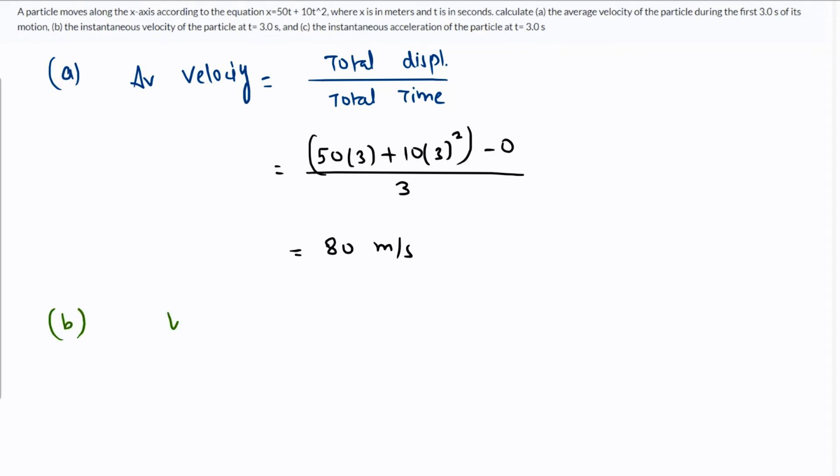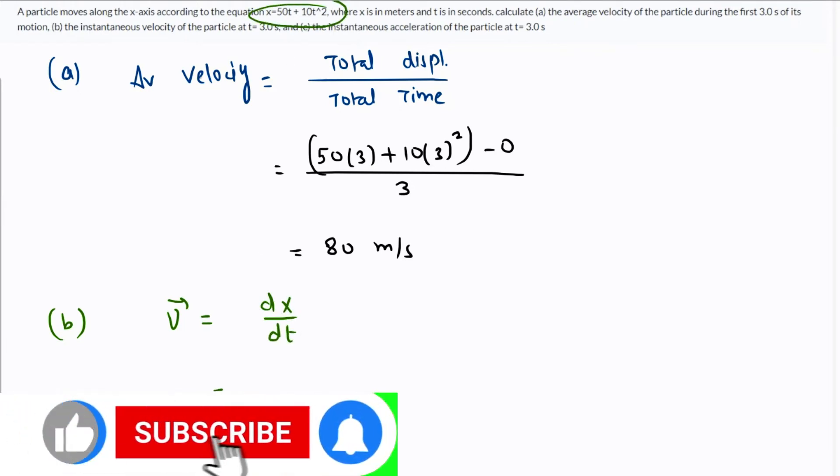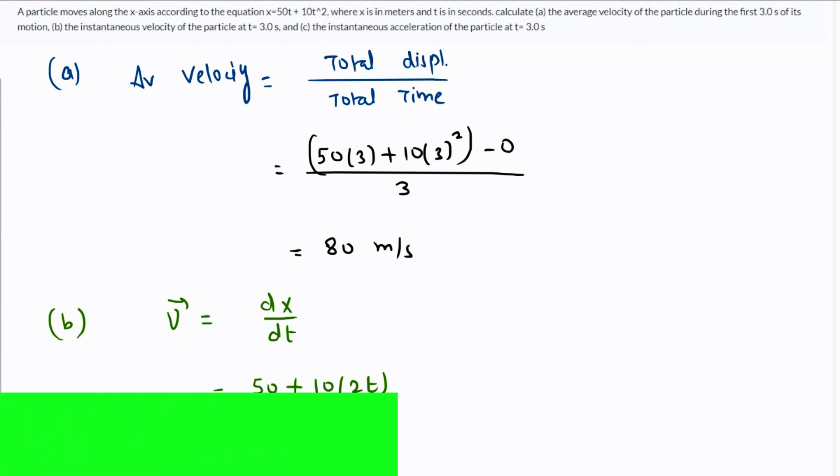To find instantaneous velocity, we use v = dx/dt. We differentiate the position equation with respect to time: that will be 50 plus 10 times 2t, or 50 plus 20t.